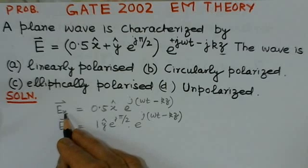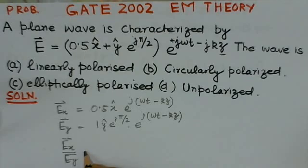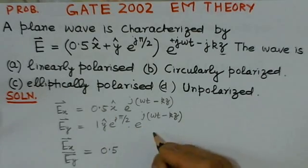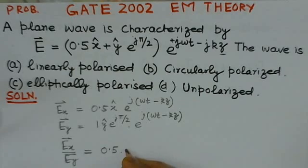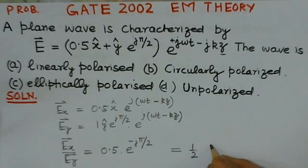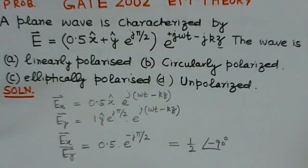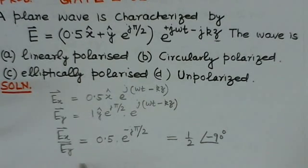Now, knowing both electric field components in x and y directions, we can take their ratio. Ex over Ey — the common exponential factor cancels out, giving us e to the power of minus j(π/2). This can be written as magnitude one-half with a phase of minus 90 degrees. So one-half is the magnitude part and minus 90 degrees is the phase part of the ratio of the electric field components in x and y directions.